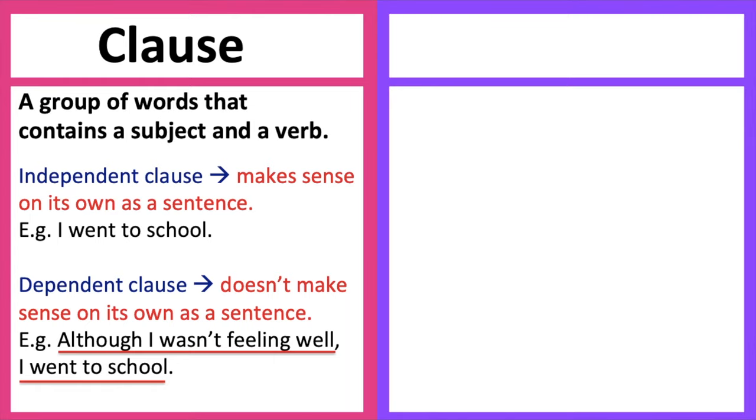Dependent clauses usually begin with a subordinating conjunction. There are many different types of subordinating conjunctions. For example, because, when, if, although, since, etc.